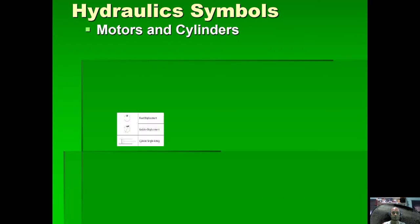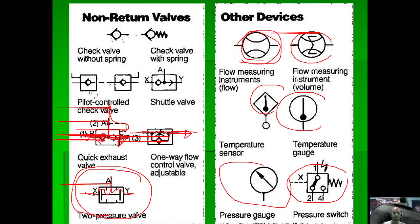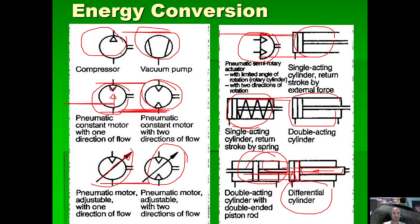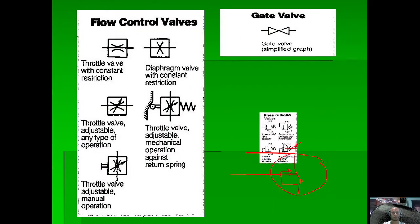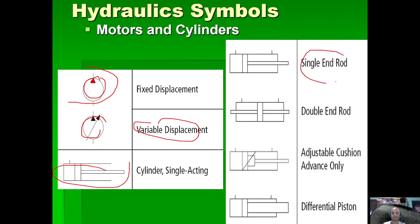Next are hydraulic symbols. For hydraulic motors, the triangle is darkened or shaded — unlike pneumatic symbols where the triangle is not shaded. So a shaded triangle indicates hydraulic. We have a hydraulic motor with fixed displacement and a hydraulic motor with variable displacement. For cylinders: single-acting, single-end rod double-acting, double-end rod double-acting, double-acting with adjustable cushion, and a differential piston double-acting with differential pressure.